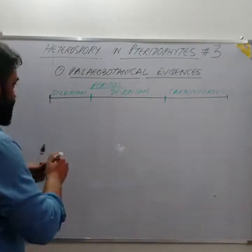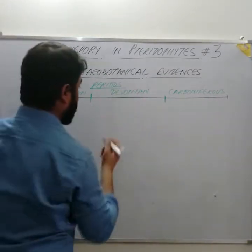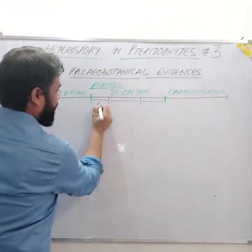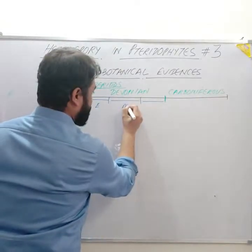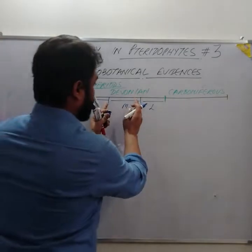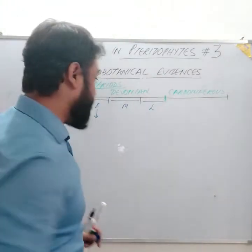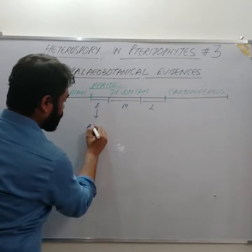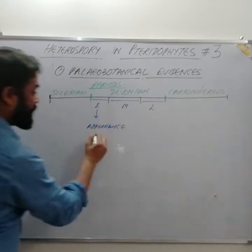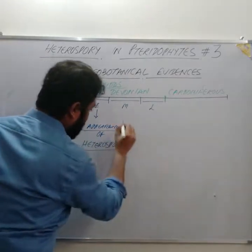Looking specifically at what happened during these periods: in the Devonian we can divide into three phases — early, mid, and late Devonian. During the early Devonian, what we observe is the appearance of heterospory.